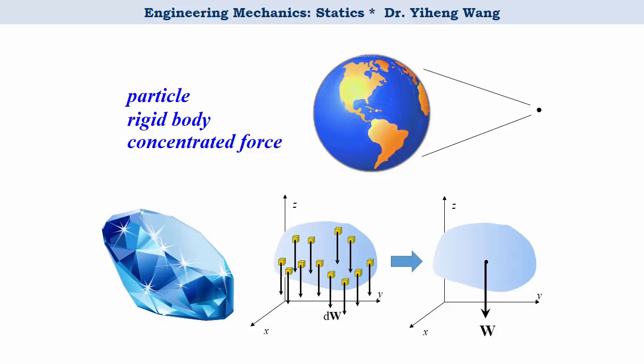A concentrated force assumes that a force only acts on a point, although in reality forces are applied to an area or a volume. For example, the weight of an object is distributed throughout its body, but in our analysis we often use a concentrated force that is placed at the center of gravity in the object to replace the distributed gravitational force.